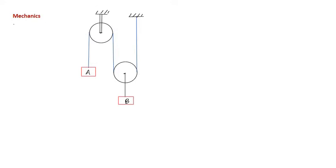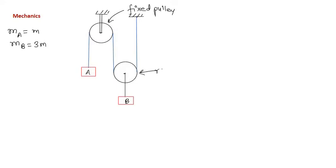There are two blocks A and B. The mass of A is m, and the mass of block B is 3m — thrice that of block A. This is a fixed pulley, and the second one is a movable pulley. The question is to find the acceleration of both blocks and the tension in the string.